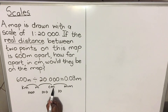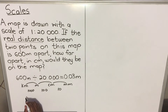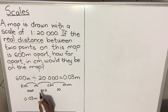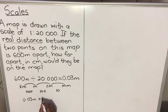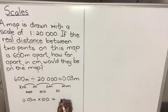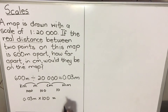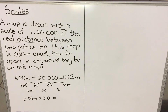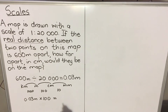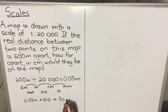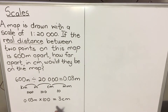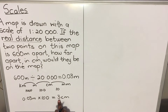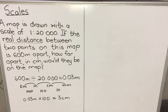Since we are moving from a bigger unit to a smaller one, going to the right, we multiply. So 0.03 meters multiplied by 100 gives us centimeters. Using the calculator: 0.03 × 100 = 3 centimeters. So 600 meters on the ground equals 3 centimeters on the map.